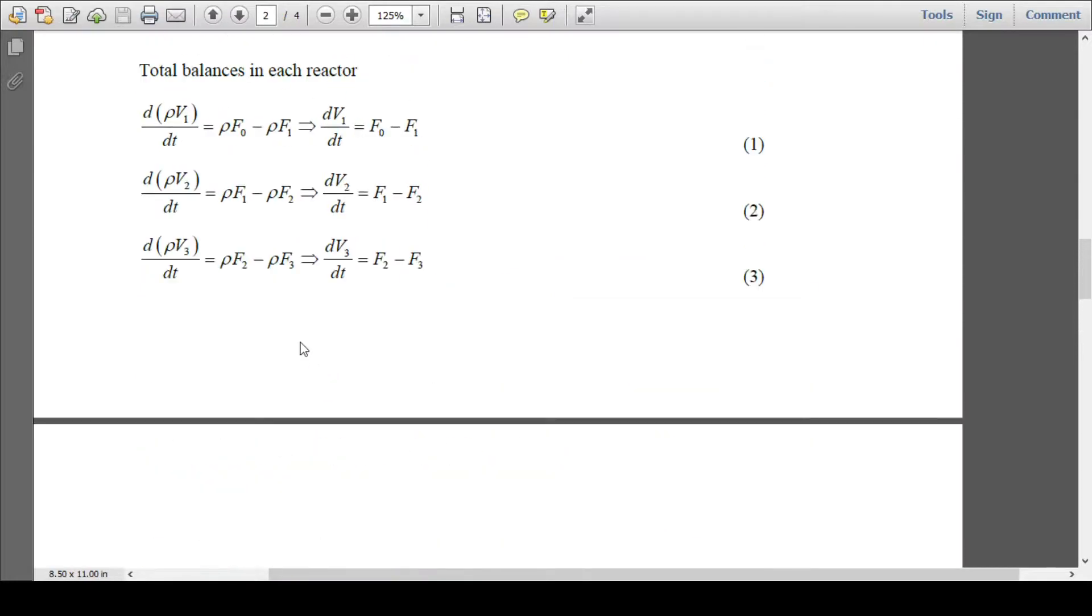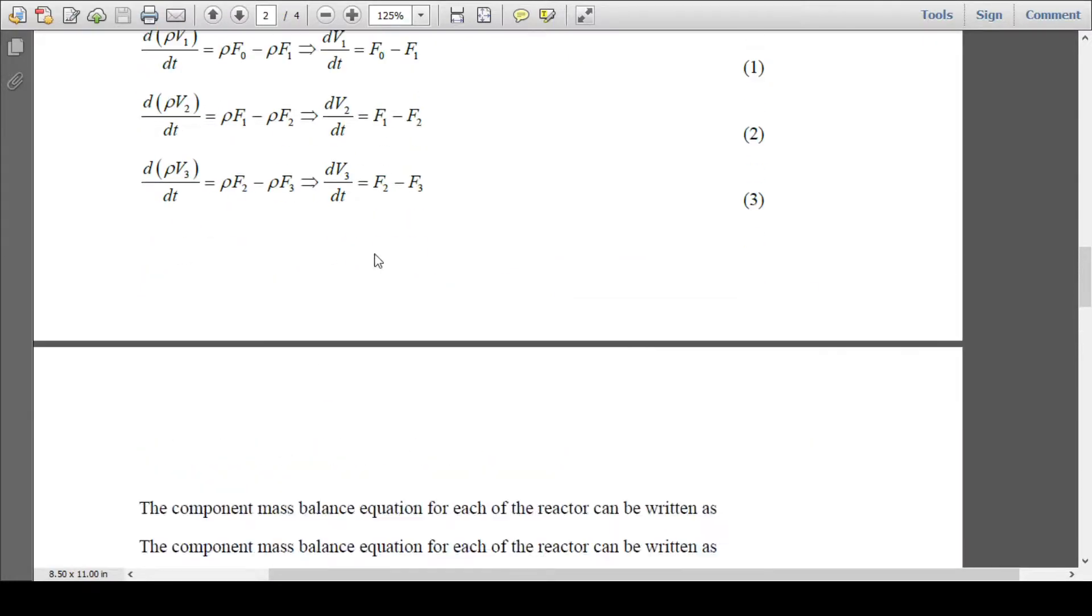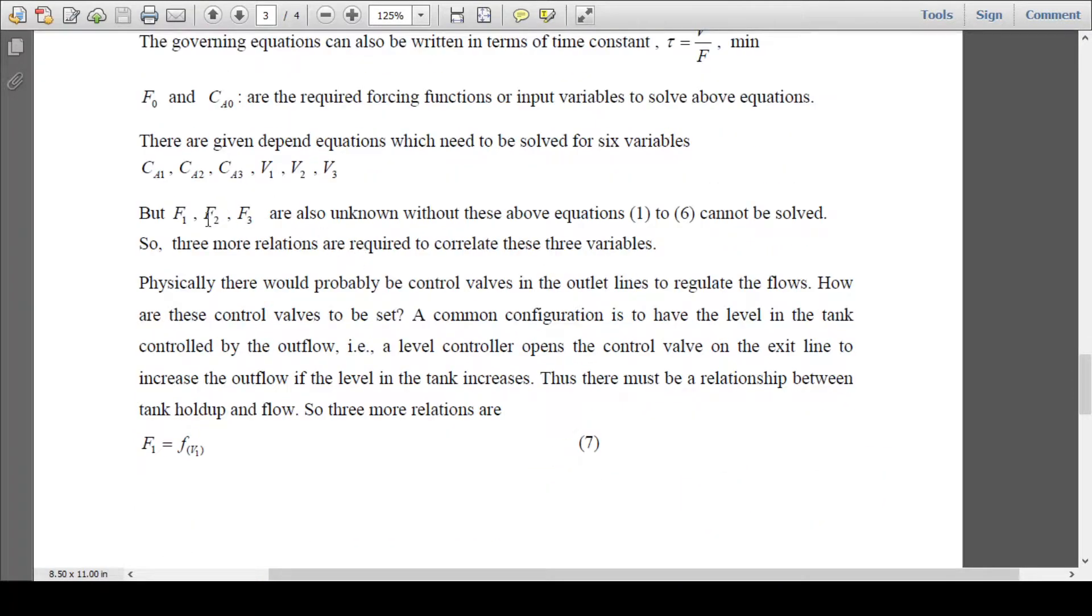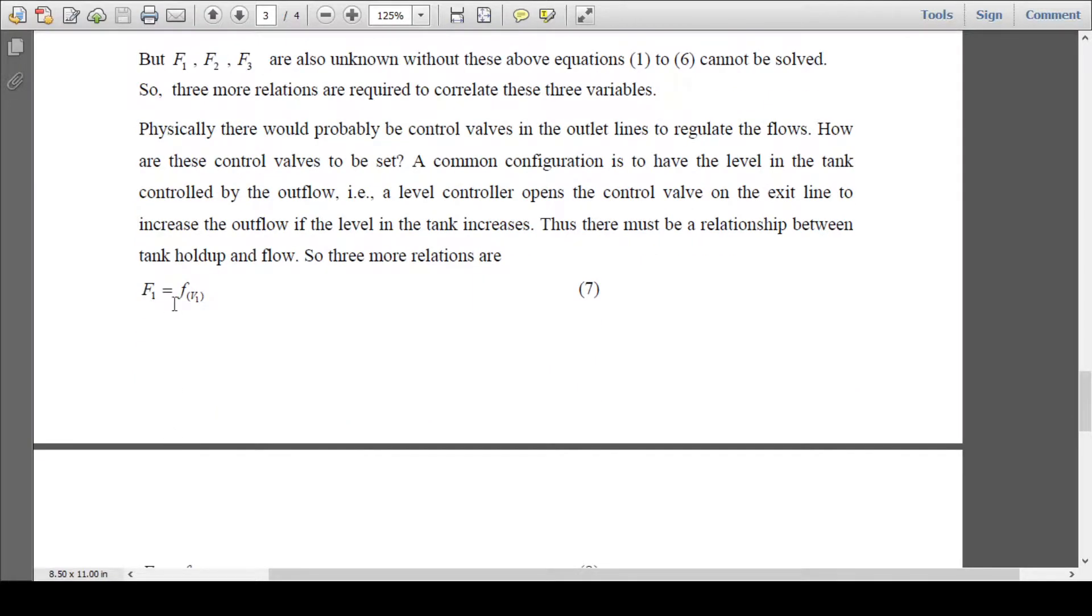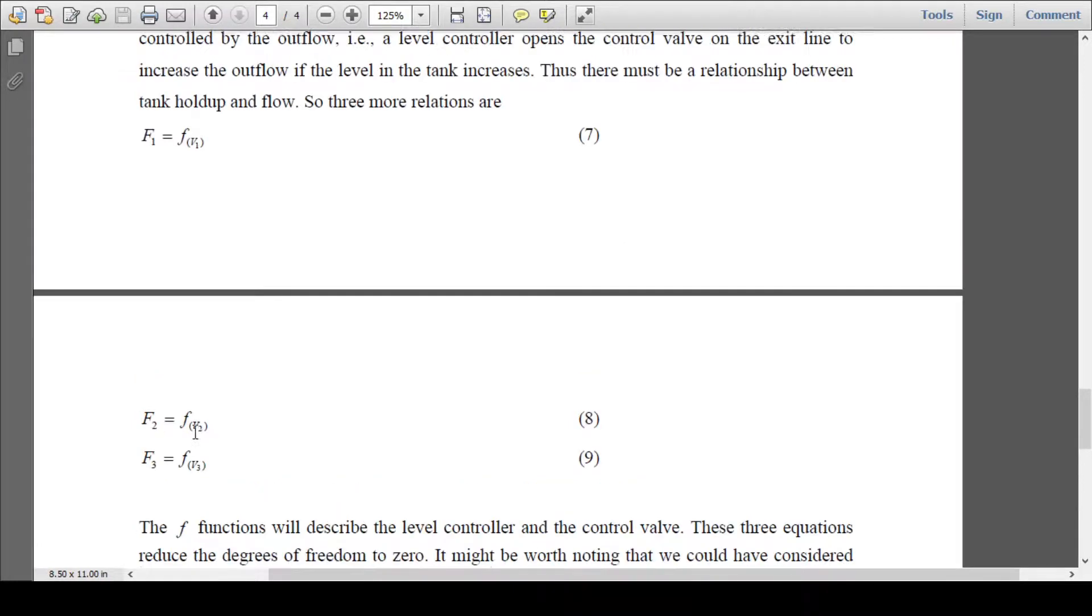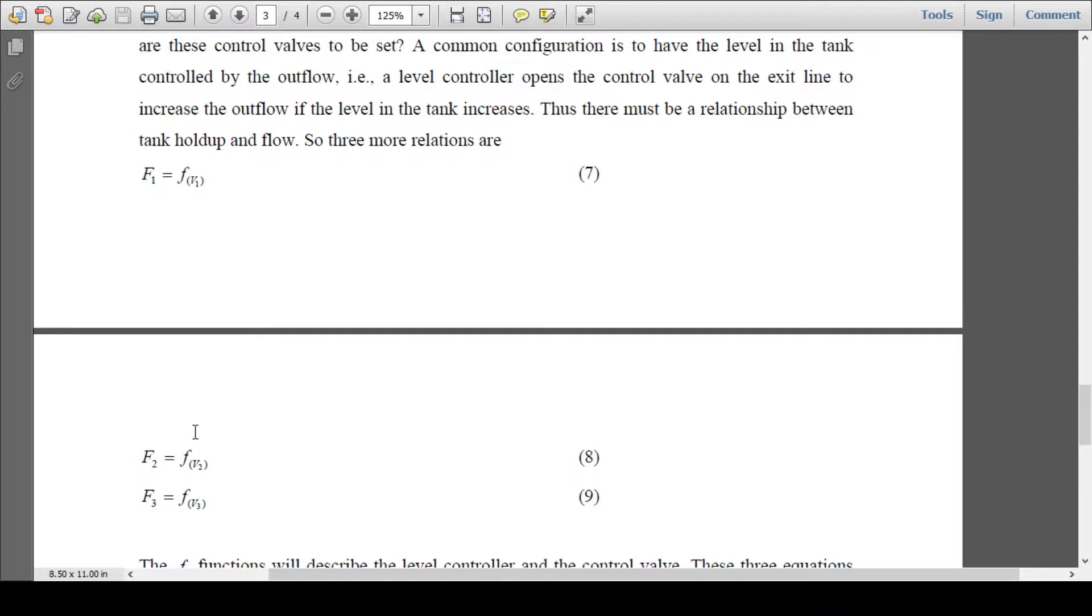But to solve them, you need F1, F2, F3, which will come from controllers. The control valves and level controllers determine the flow. So F1 would be a function of V1, F2 would be a function of V2, F3 would be a function of V3. You have three level control equations which will provide F1, F2, F3.